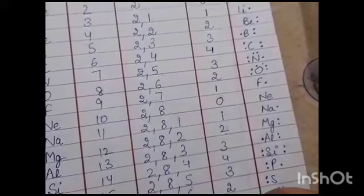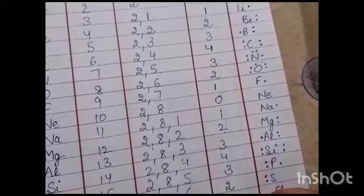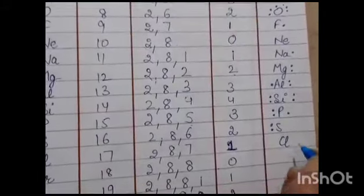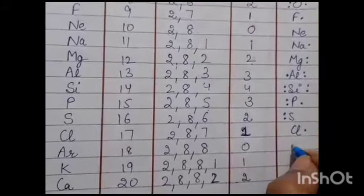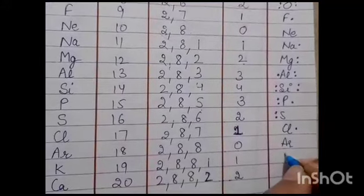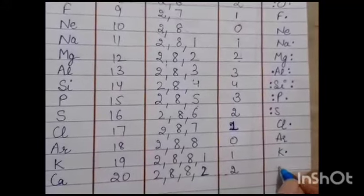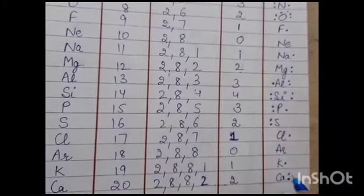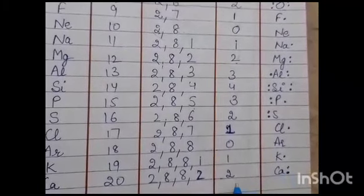For argon, for potassium, and for calcium. So this dot defines the valency. How many electrons are valence.